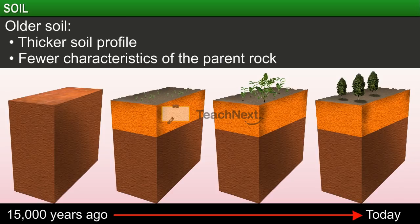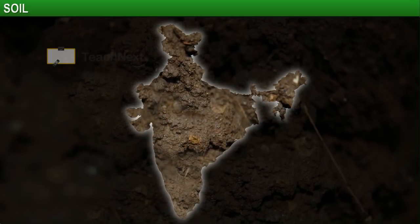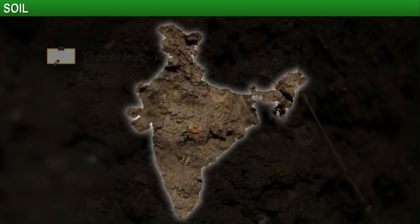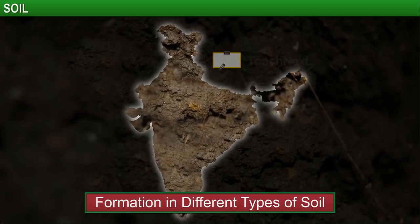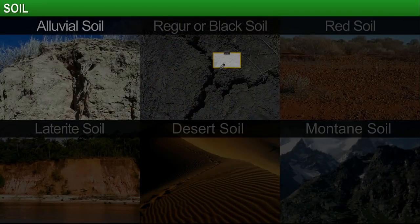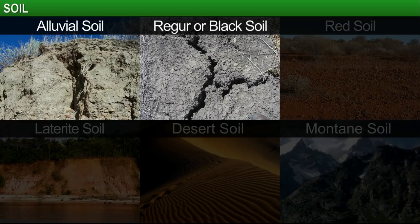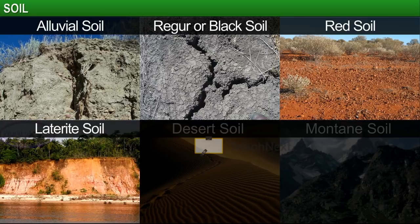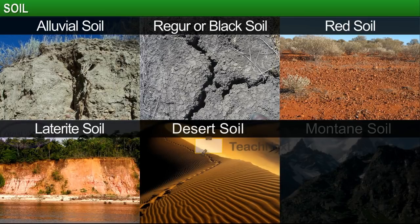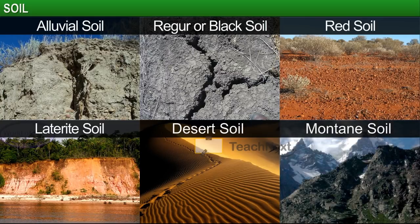However, due to the introduction of other matter in the soil over time, older soil retains relatively fewer characteristics of the parent rock. All of these factors together result in the formation of different types of soil. The types of soil found in India include alluvial, black, red, laterite, desert, and montane soil.